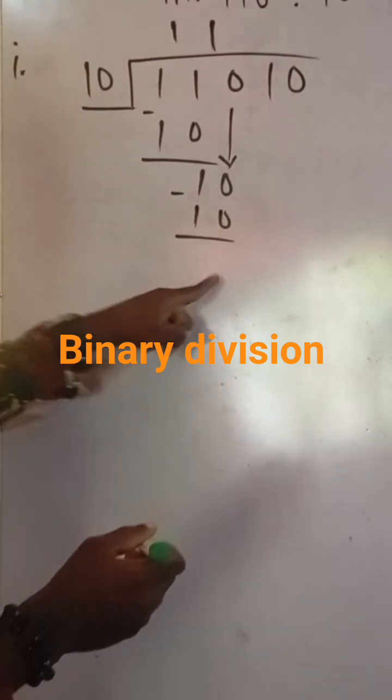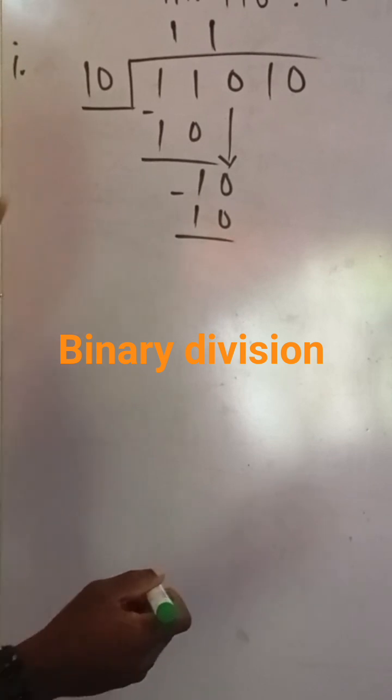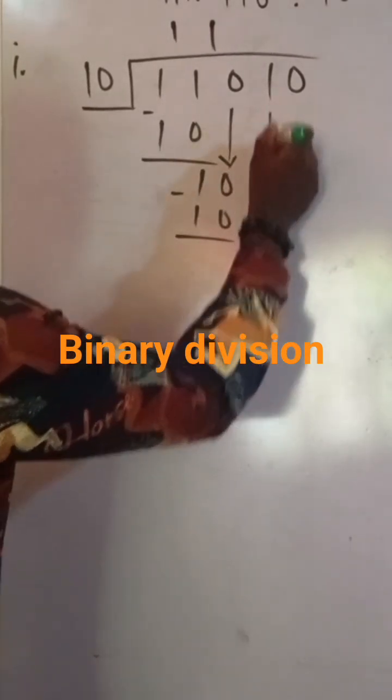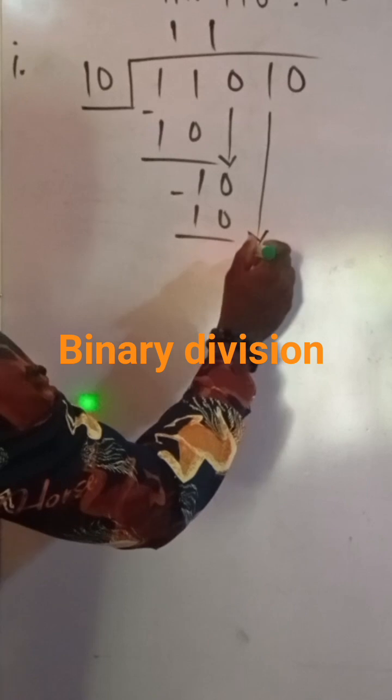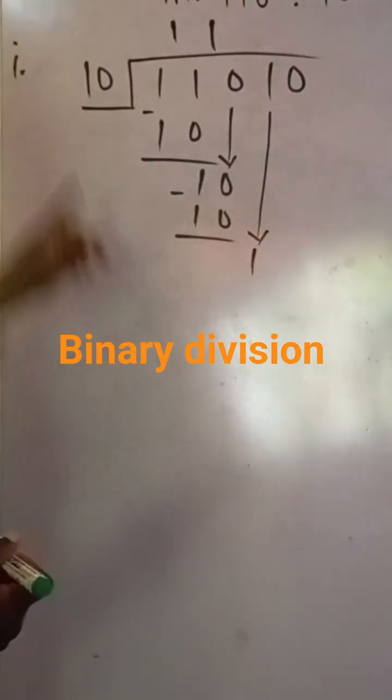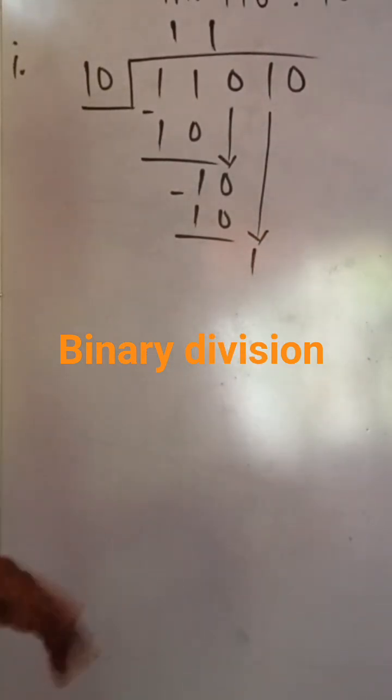I'll bring down the next value, which is 1. Now 10 into 1 cannot go.